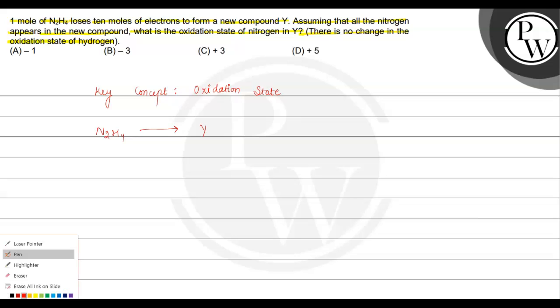In 1 mole of N2H4, there are 2 nitrogen atoms present. So Y will have 2 nitrogen atoms present.